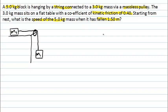The masses are connected by an inextensible string — that means the string's length doesn't change. So when M1 moves down 1.5 metres, M2 must also move along 1.5 metres. The velocity of M1 and the velocity of M2 must be the same since they're joined together, and similarly their accelerations must also be the same.